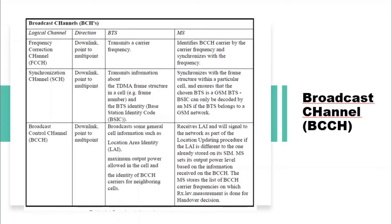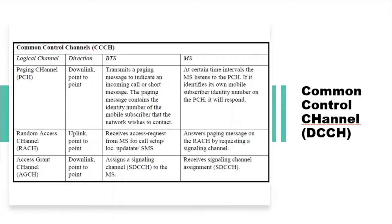The Frequency Correction Channel (FCCH) is used by the mobile station for tuning their reference carrier frequency. The Synchronization Channel (SCH) is used for frame synchronization and identification of the Base Transceiver Station in whose service area the mobile station is located. The Broadcast Control Channel (BCCH) is used for transmission of information that controls the network, a particular cell, and neighboring cells.